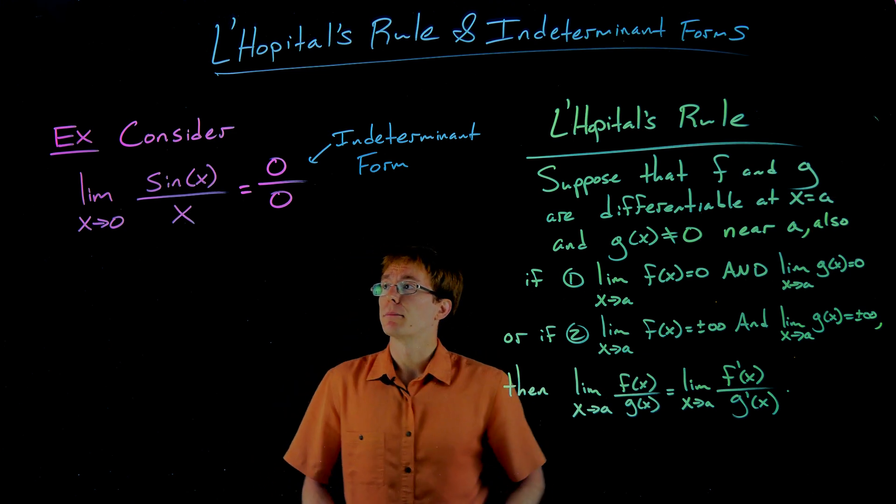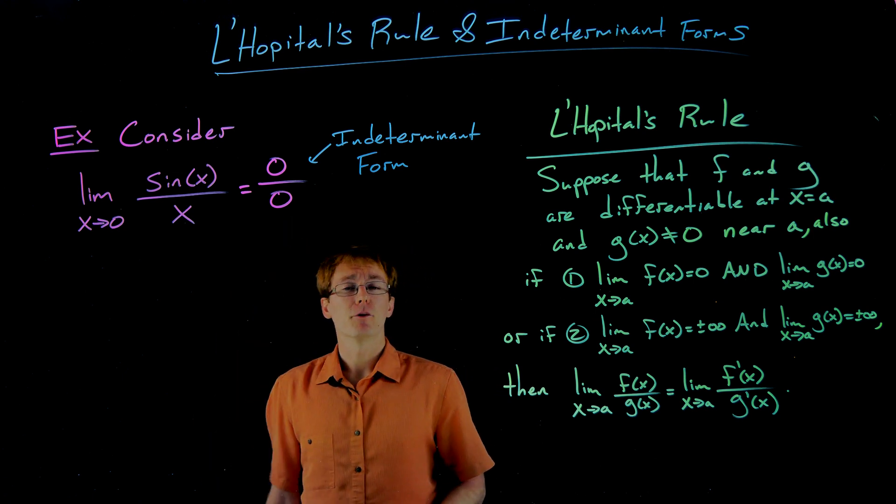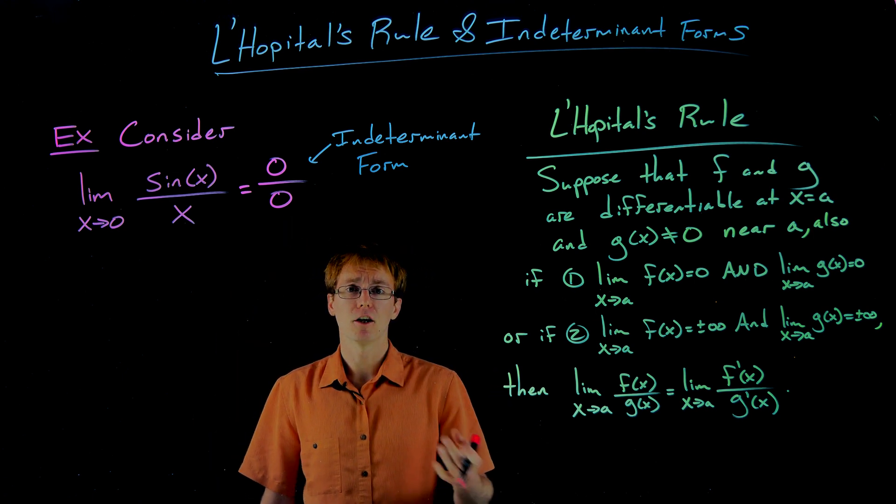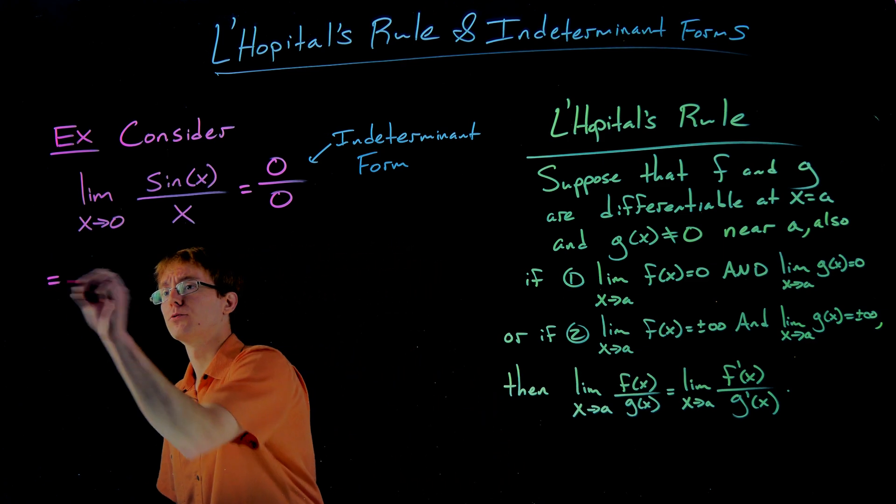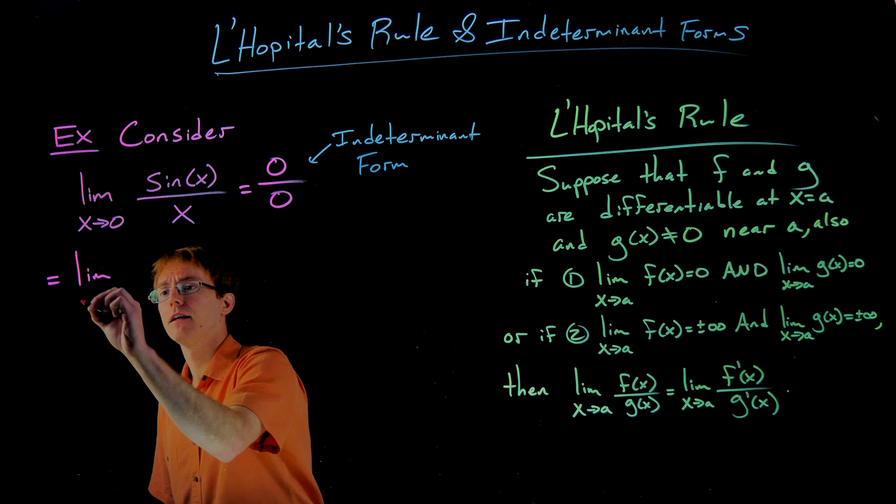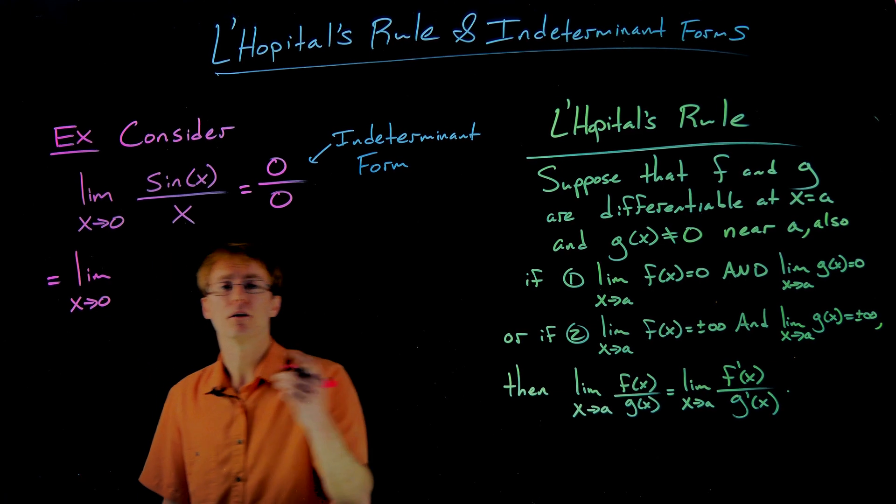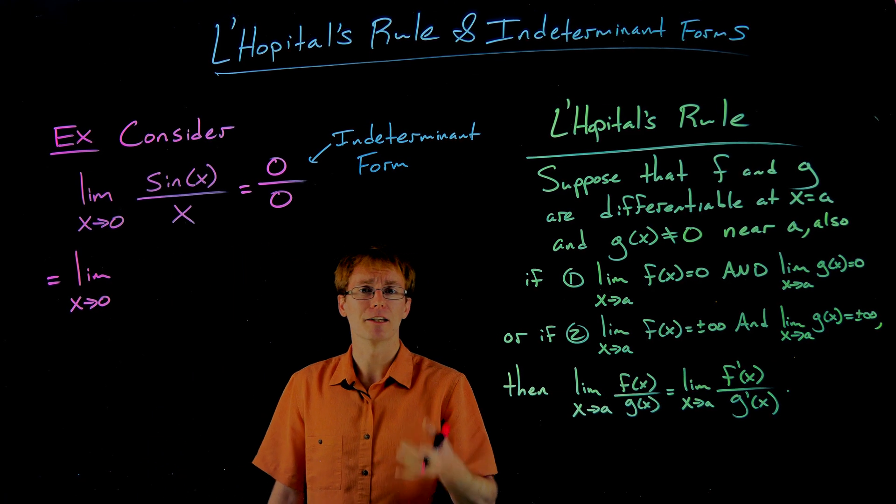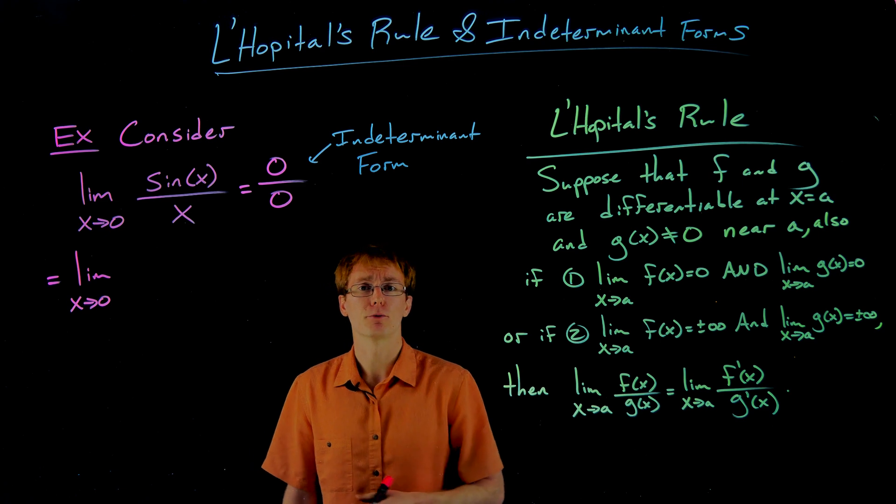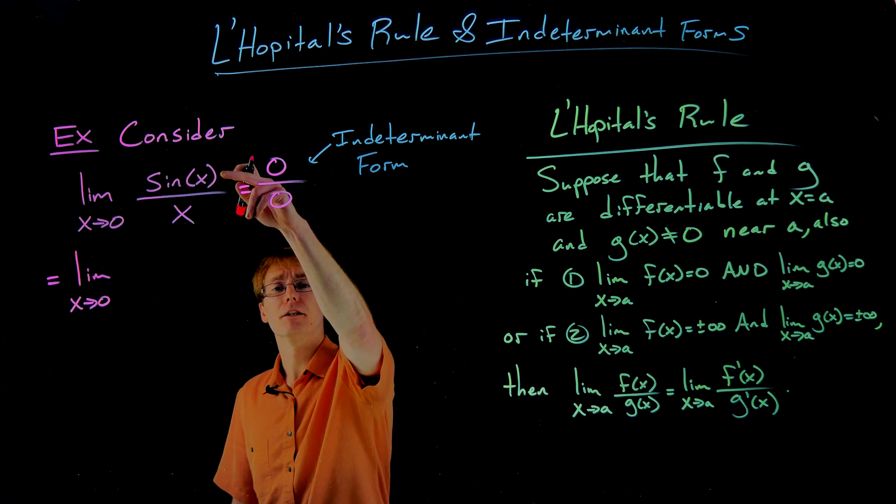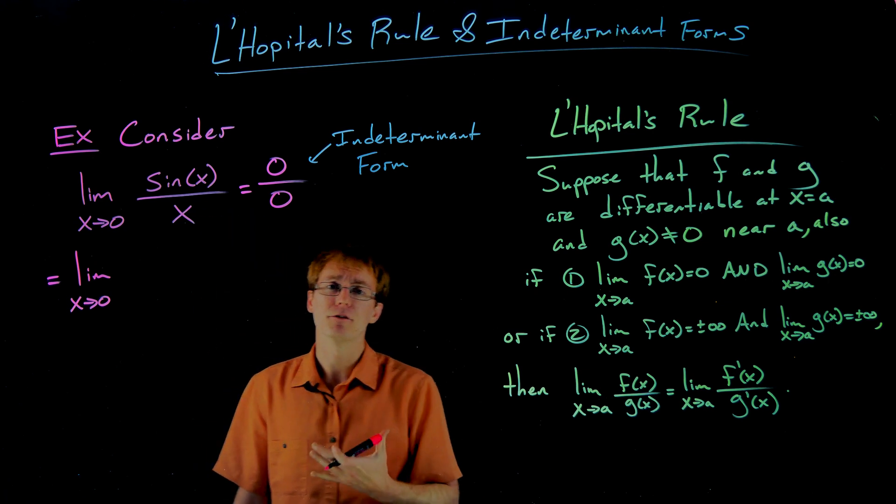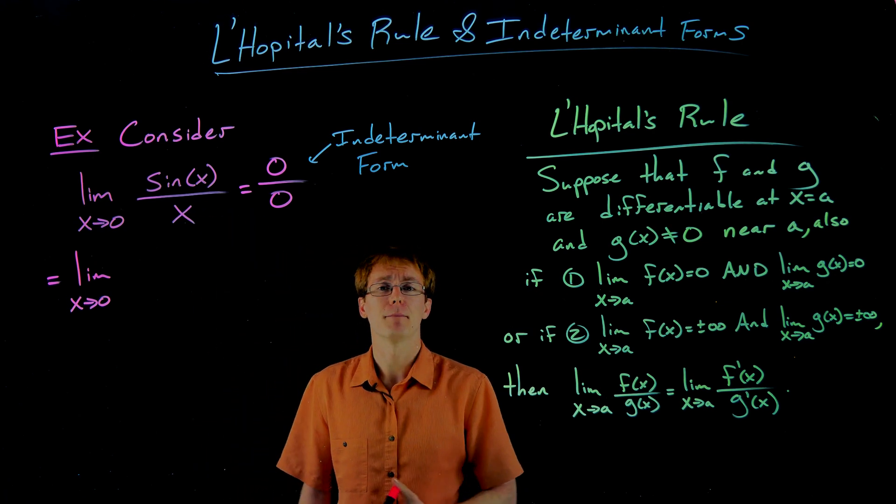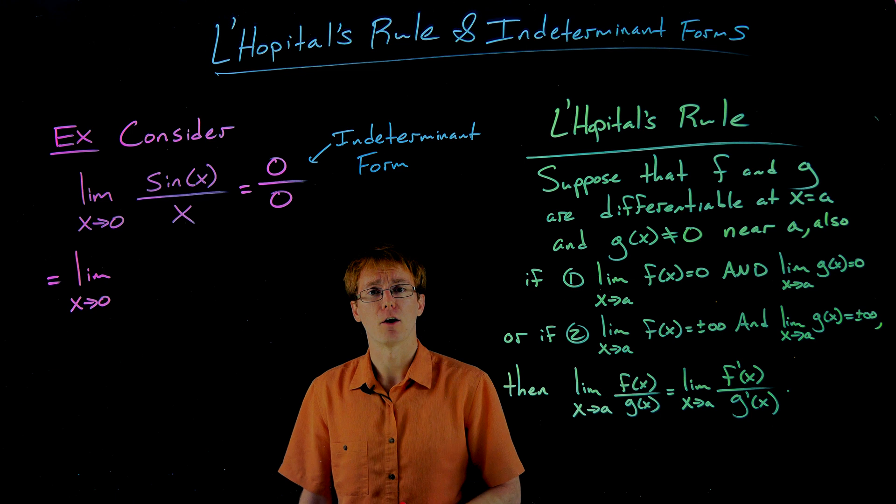So in our example over here, we've kind of verified that we do have that indeterminate quotient of zero over zero, and that means we can apply L'Hopital's rule. And what L'Hopital's rule tells us is that the limit as x approaches zero of sine of x over x is going to be equivalent to the limit as x approaches zero of the derivative of the numerator or the rate of change of the numerator divided by the derivative of the denominator or divided by the rate of change of the denominator.